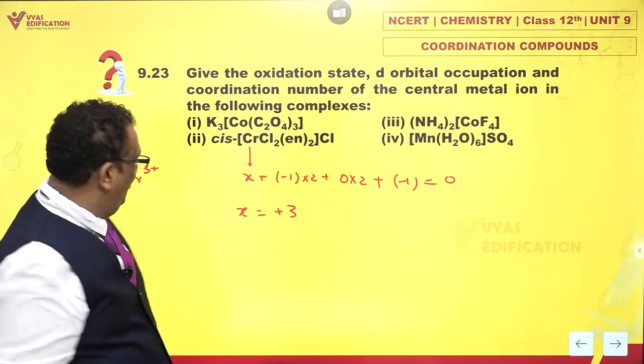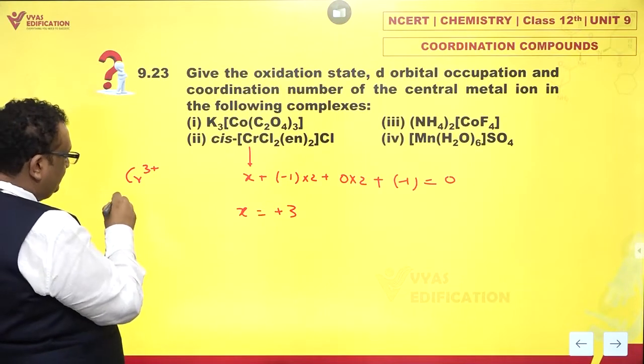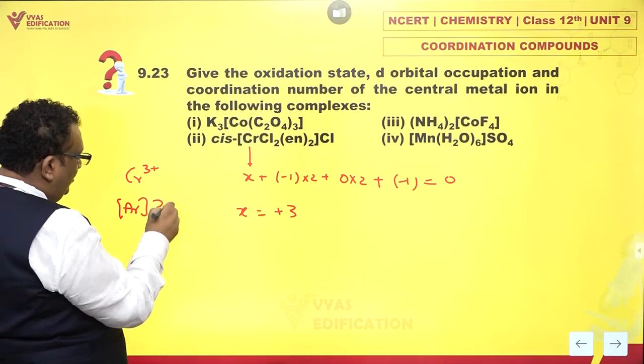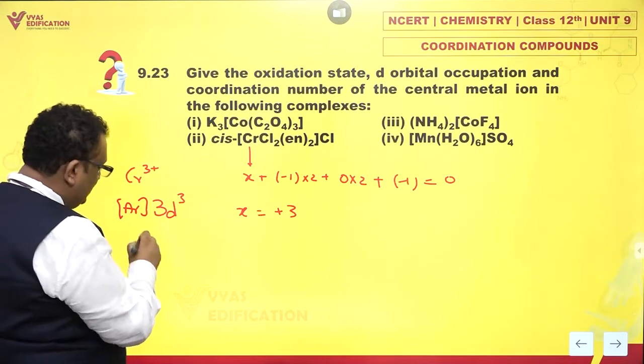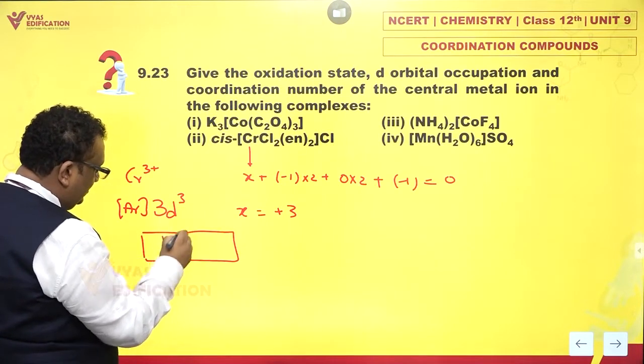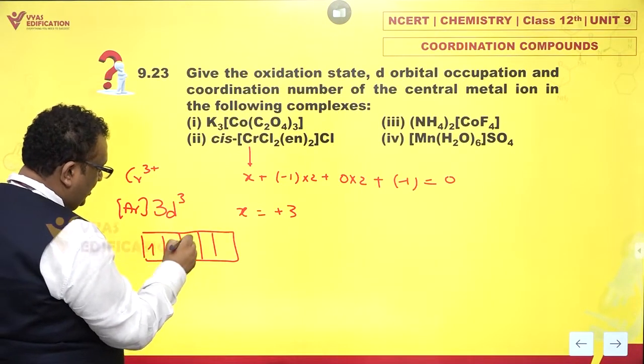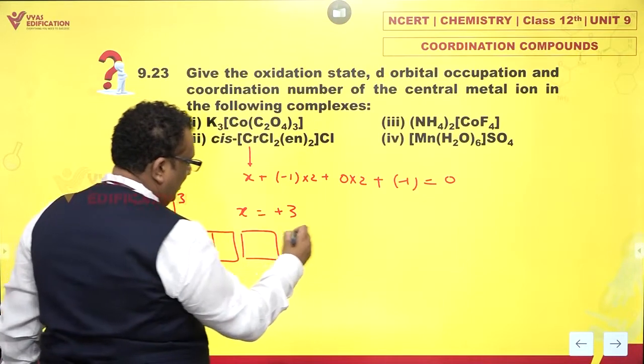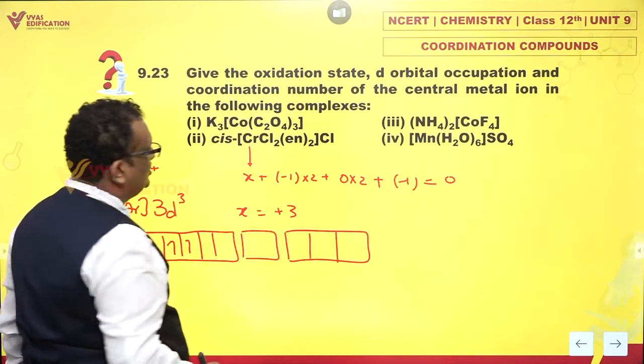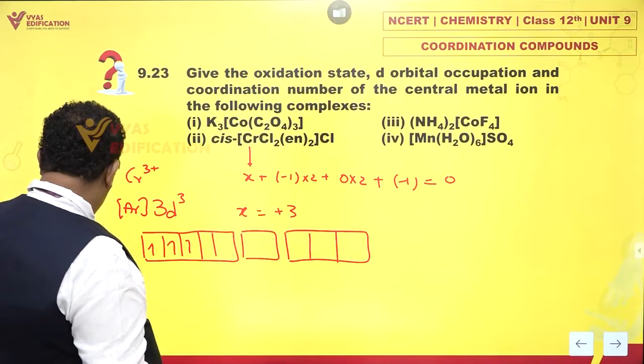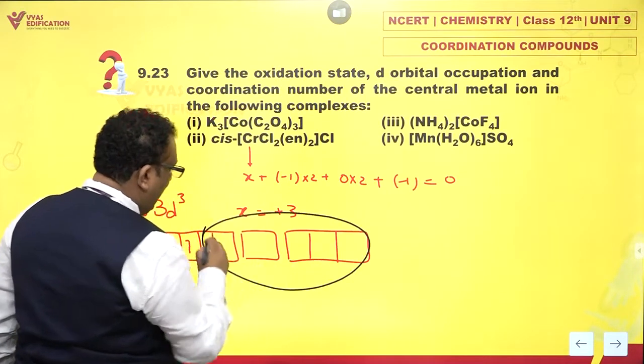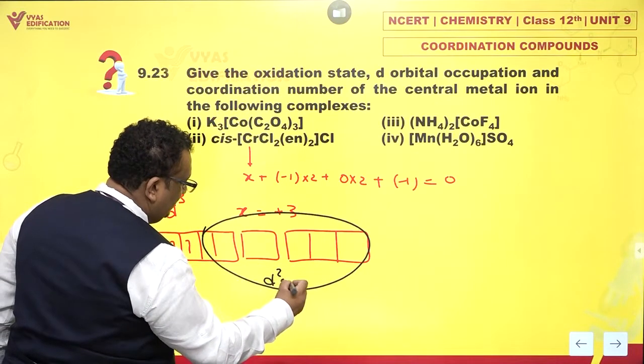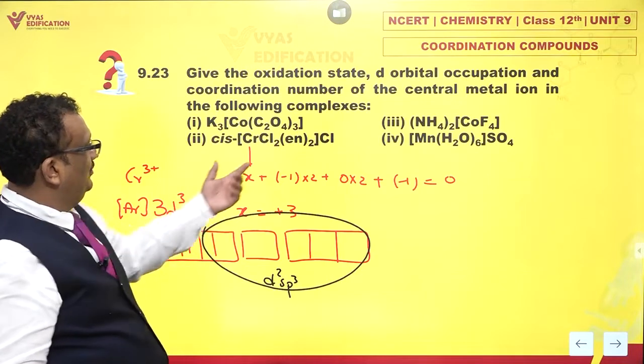So, oxidation number of chromium is +3. Argon 3D3. This is the electronic configuration. And if you expect a box diagram, then this is what we have. Hybridization, very happily, is D2SP3. Perfect.